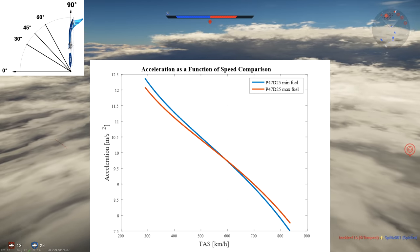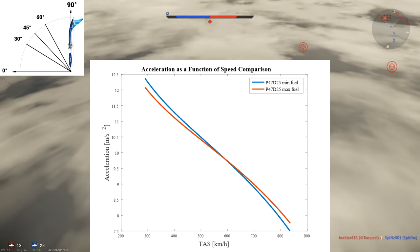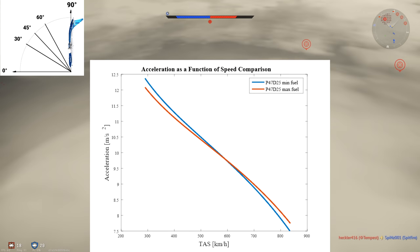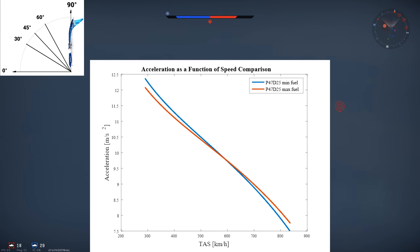The curves start at 298 kilometers per hour TAS, which is around climb speed at 2500 meters. You can see that the minimum fuel P-47 in blue accelerates better at low speed. That's logical, since gravity is accelerating both of them equally at 9.8 meters per second squared, and then the 12% higher power to weight ratio of the minimum fuel P-47 makes it accelerate faster at low speed, which was expected.